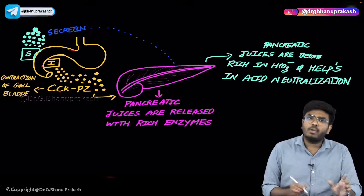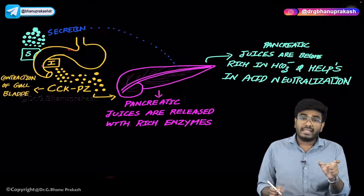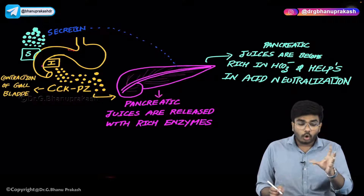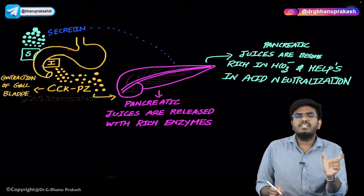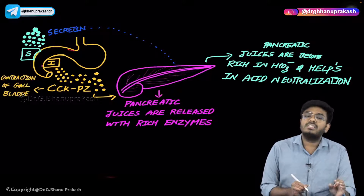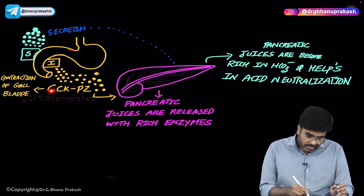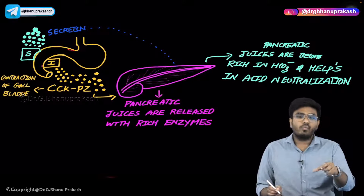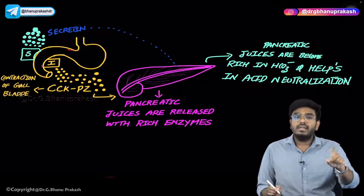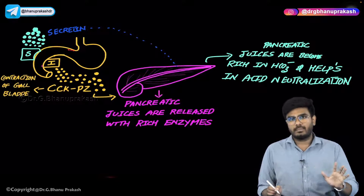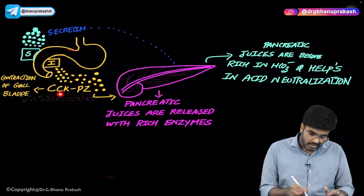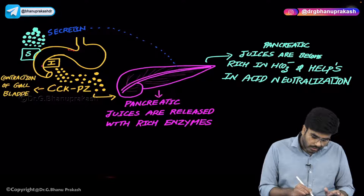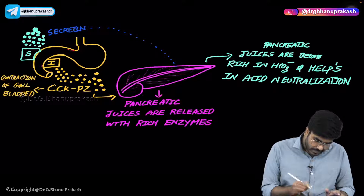CCK stands for cholecystokinin. Wherever you use the word 'kinin', it means movement — so 'cholecystokinin' means movement of the cholecyst (gallbladder). Cholecystokinin causes contraction of the gallbladder, so whatever bile is stored inside the gallbladder is now released into the duodenum. So I cells release CCK-PZ, and the CCK component acts on the gallbladder, causing its contraction and release of bile.